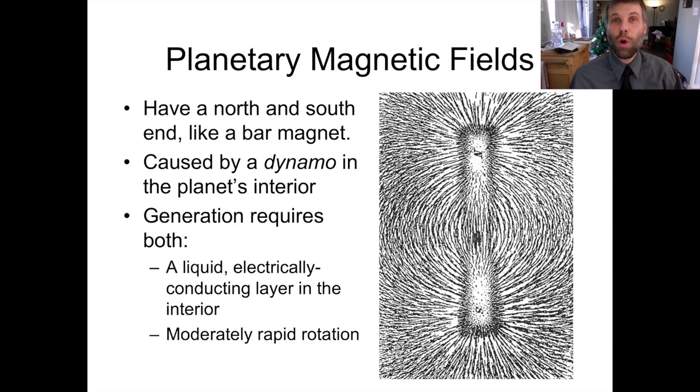But planets don't generate magnetic fields the same way a bar magnet does. There's not some sort of big bar magnet buried somewhere inside the planet. Instead, a planet is going to generate a magnetic field through a process called a dynamo. This dynamo process is ubiquitous across all planets that have orderly global magnetic fields.